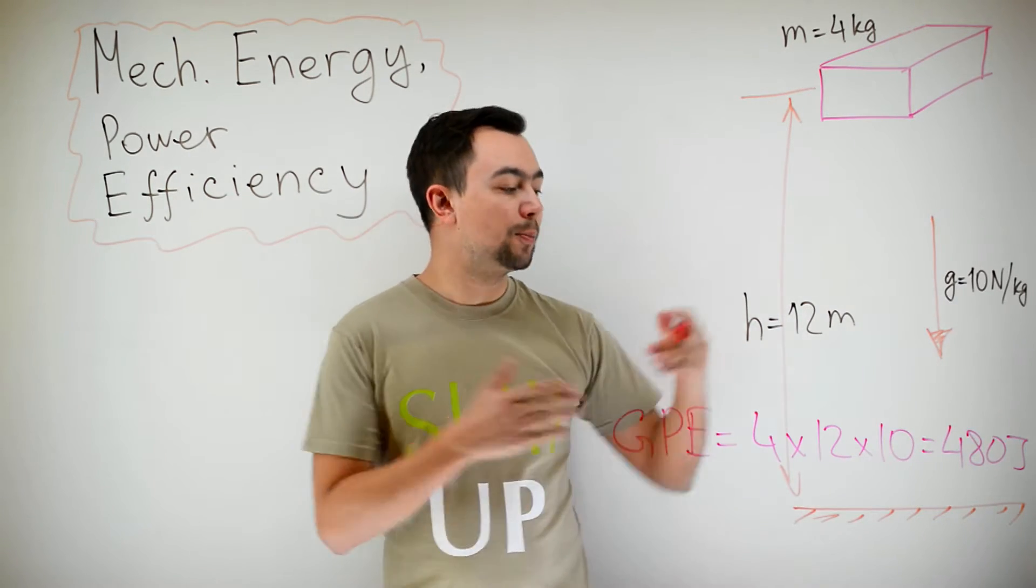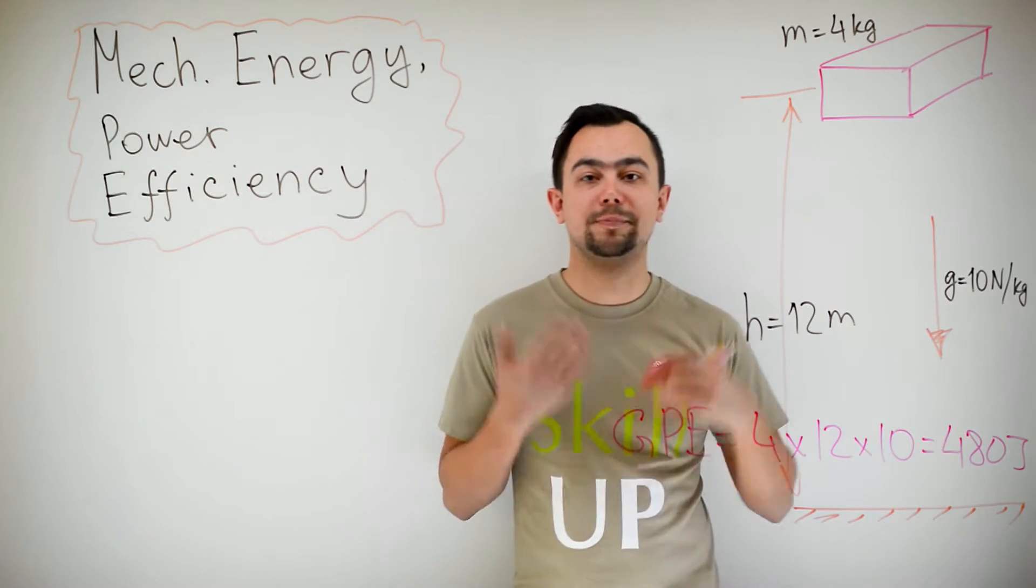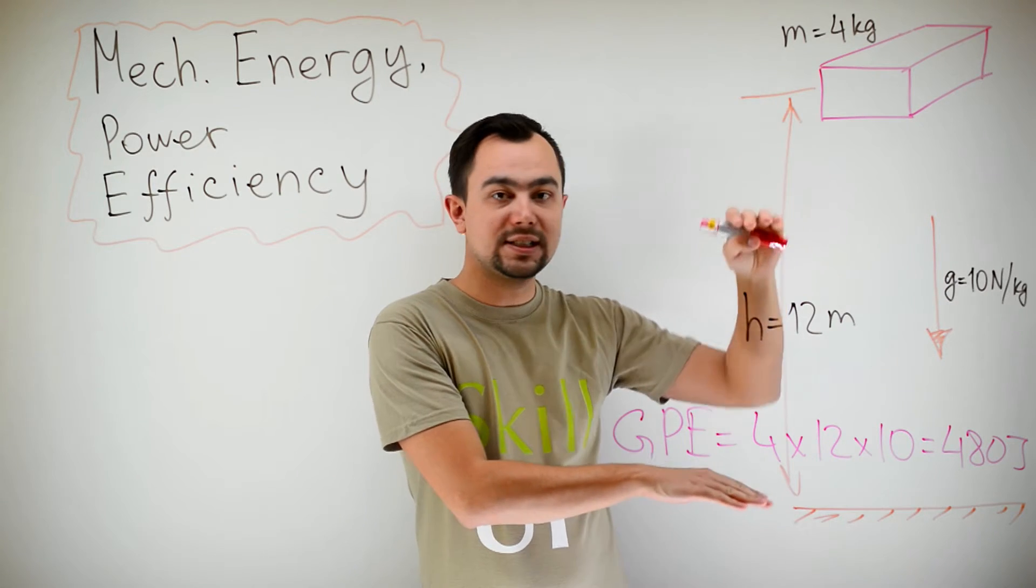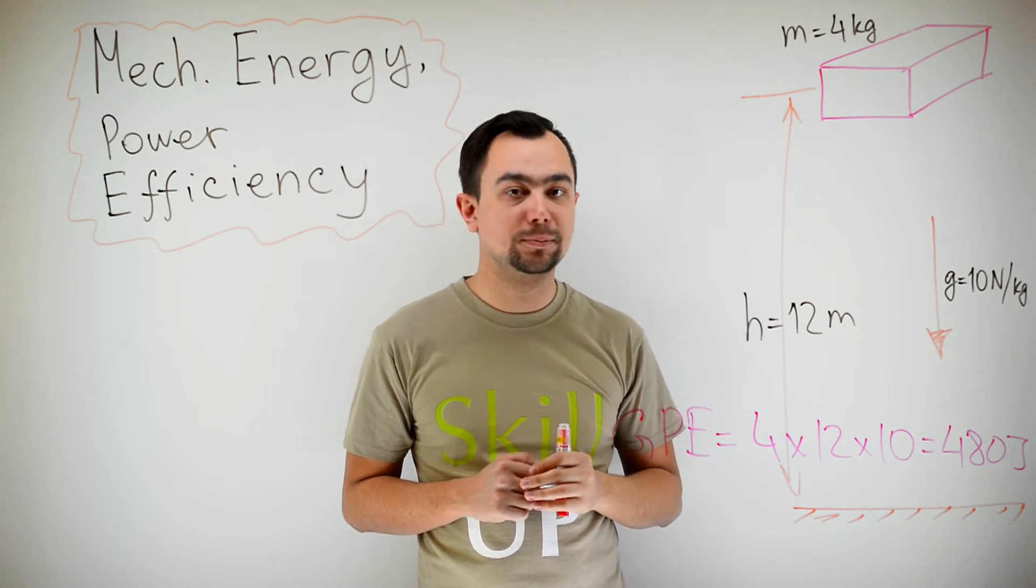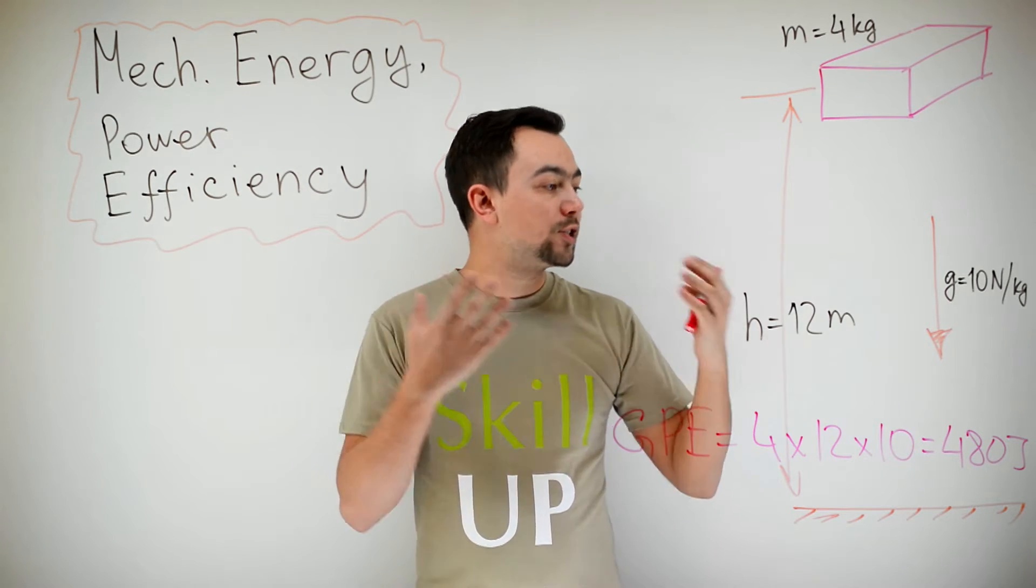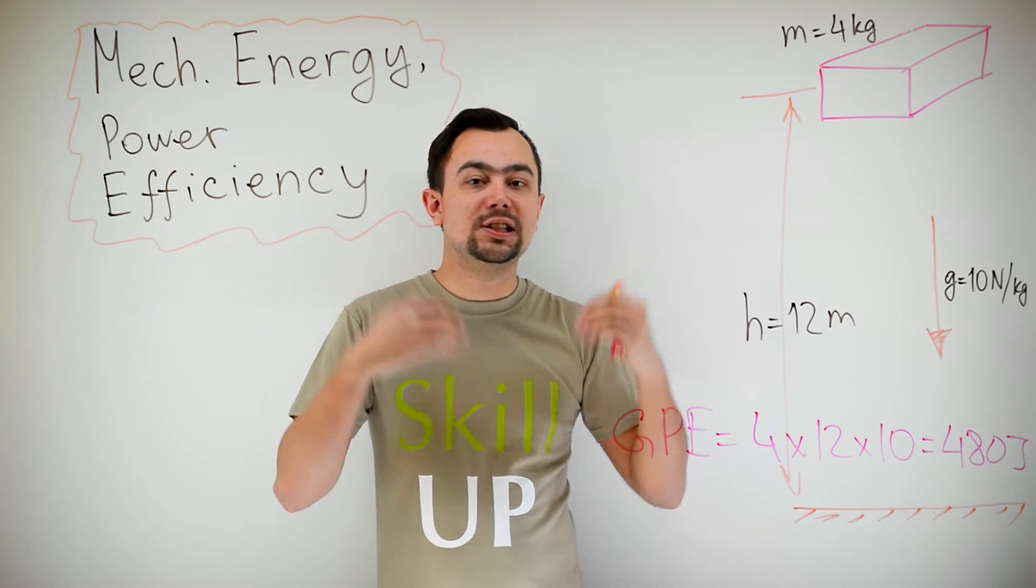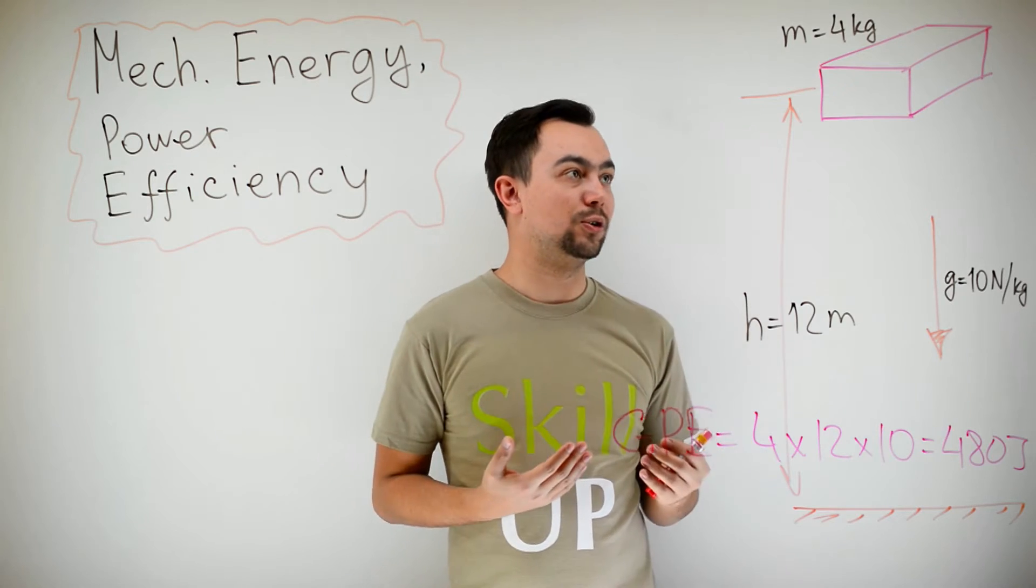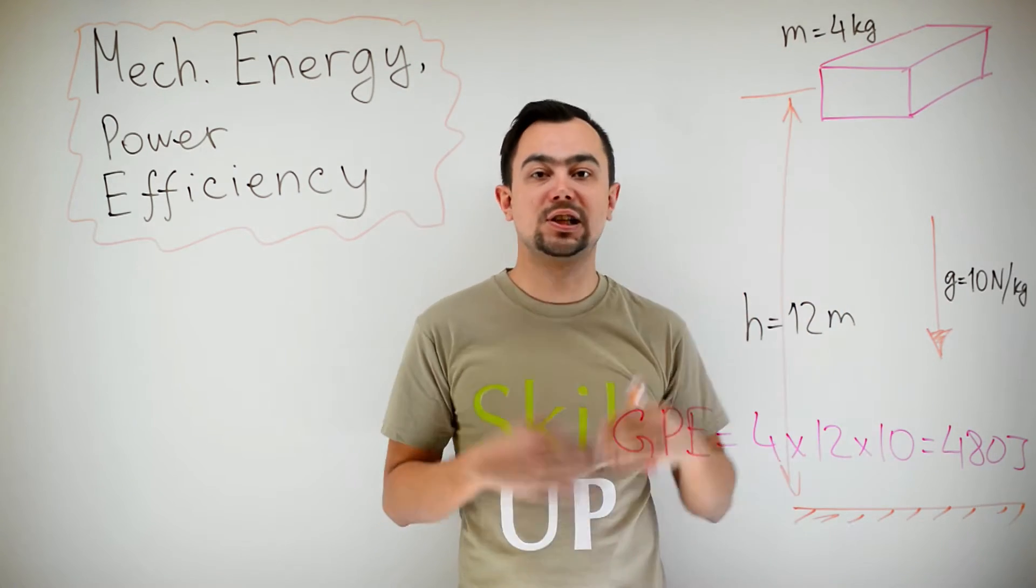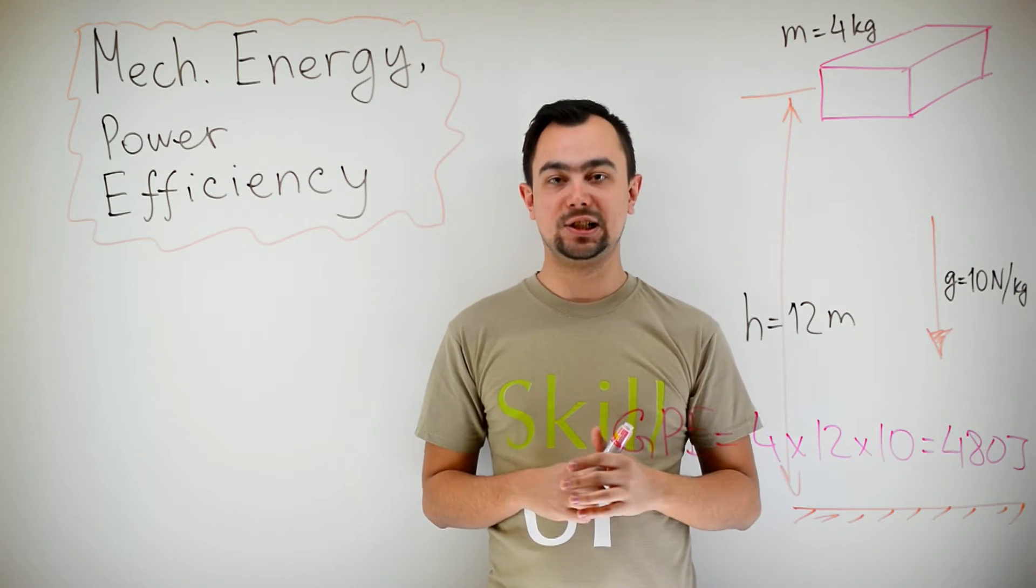Now, the brick has 480 joules of potential energy. If we let go of the brick, the height decreases, so the gravitational potential energy also decreases. So what is this energy converted into? Well, gravitational potential energy as the brick falls down is converted to kinetic energy of the brick.